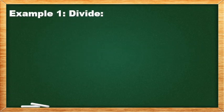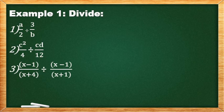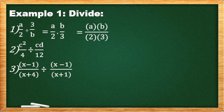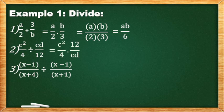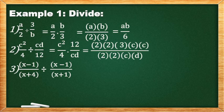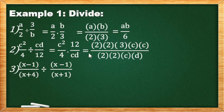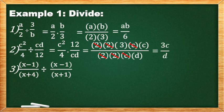Example number 1: First step, copy the dividend and reciprocal of the divisor, change sign operations. Wala tayong makakancel, so the final answer natin dyan: AB all over 2×3. 2×3 is 6, so the final answer is AB/6. Number 2: Copy C²/4. Reciprocal ng CD/12 is 12/CD. Then, multiply. Pagdikitin muna natin, then expand. And 12 — prime factor is 2×2×3. Yung C squared, since the exponent is 2, kinopya ng dalawang beses. Sa baba, prime factor of 4 is 2×2. Cancel: may makakancel tayong C. Ano natira? 3C/D. This will be the final answer.